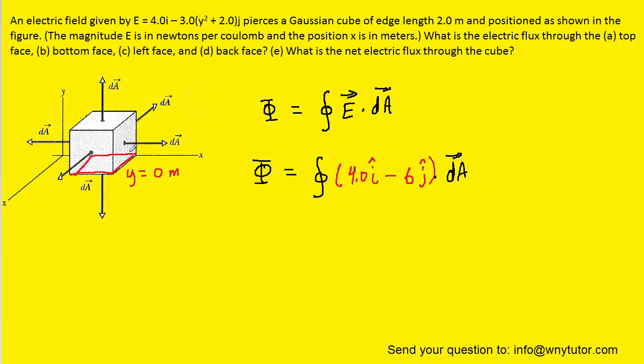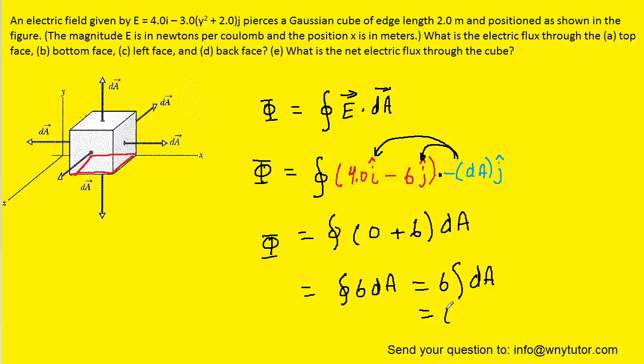For the dA, because we're calculating the flux to the bottom surface, we note that the dA is projecting downward in the y direction. So this dA can be substituted with negative dA j-hat. We'll have to distribute, and an i-hat multiplied by a j-hat is zero. A j-hat times a j-hat cancels out, and we're multiplying a negative by a negative, so this is plus 6 dA. That simplifies to the integral of 6 dA. We'll pull the 6 out, and the integral of dA equals the area.